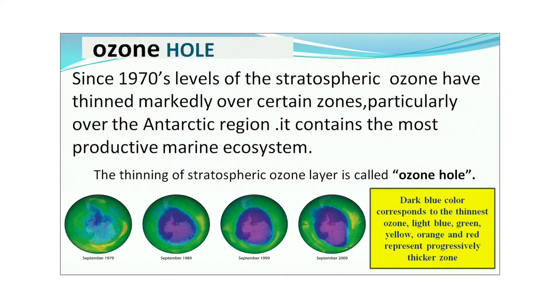Since 1970, levels of stratospheric ozone have thinned markedly over certain zones, particularly over the Antarctic region, which contains the most productive marine ecosystem. Four satellite images from 1979 to 1989 to 1999 to 2009 show the gradual disappearance of natural ozone — depicted by orange and red color — with the latest image almost entirely blue, showing the thinnest layer of ozone.